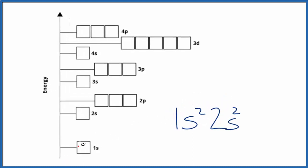So in the 1s, we have two. We put them here in opposite directions, and the 2s, we have two. And that's it. We've used all four of our electrons here. So this is the atomic orbital diagram for beryllium.